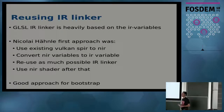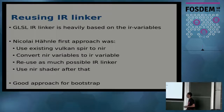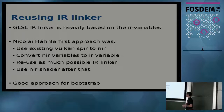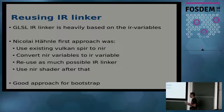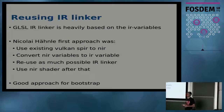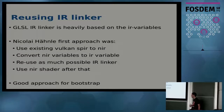The first approach from Nikolai was to try to reuse the IR linker as much as possible. He took the NIR variables and converted them to GLSL IR variables, reusing as much of the IR linker as possible, then using the new shader as usual. That was a really good approach for bootstrapping — it allowed having a lot of linking already done and let him test the code with several cases, getting some shaders working.